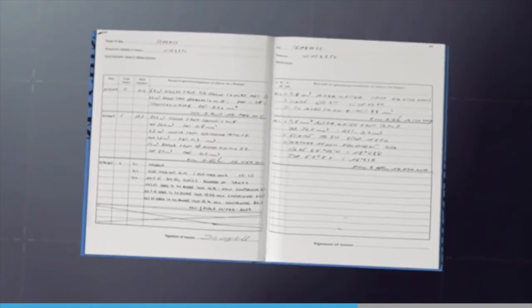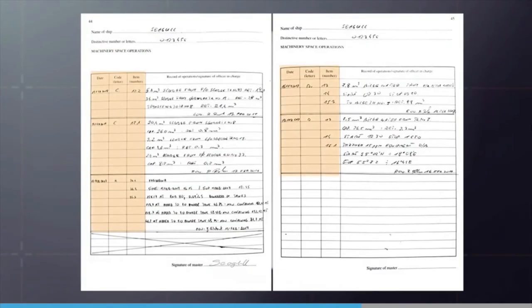The Oil Record Book Part 1 must be accurately completed for every discharge from machinery space bilges. The date, operational code, and item number needs to be written in the appropriate columns, and the required particulars should be recorded chronologically in the blank space. For discharges overboard, the ship's position at the start and end of the discharge should be entered. Each completed operation shall be signed for and dated by the officer or officers in charge of the operation. Each completed page must then be countersigned by the master of the ship. Failure to fill in the oil record book in a proper way has led to those on board and companies being prosecuted.